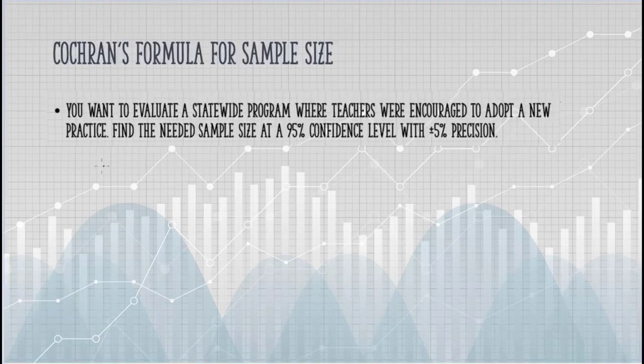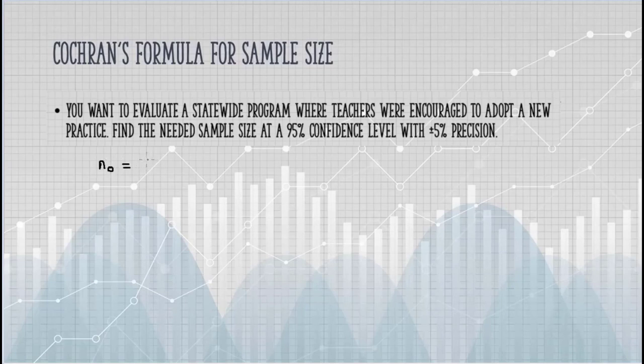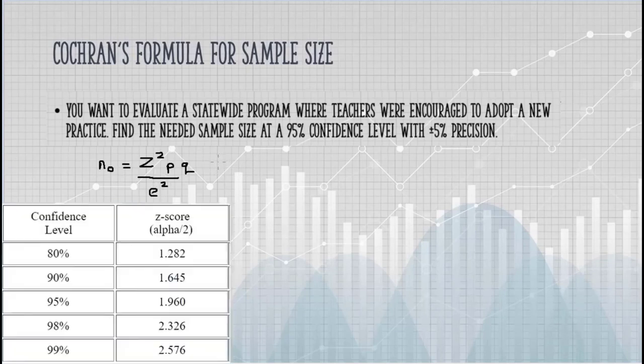Cochran's formula works best for large populations, and as we have a statewide population of teachers, we're going to assume the population is large. Here's our formula. Z is a Z score from the Z table, but you don't actually have to look this up. Here's a table of common confidence levels and their Z scores. We're working with a 95% confidence level, so we need 1.96.